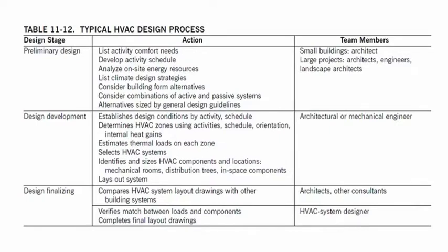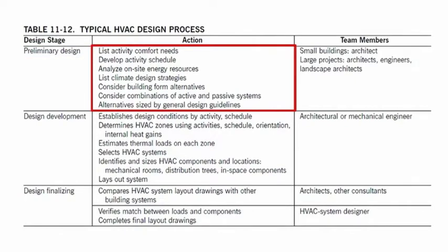The first stage is the preliminary design stage. Actions in this stage include listing activity comfort needs, developing activity schedule, analyzing on-site energy resources, listing climate design strategies, considering building form alternatives, considering combinations of active and passive systems, and determining alternatives sized by general design guidelines.